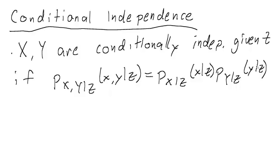And intuitively, this means that once we know Z, then knowing something about Y doesn't tell you anything about X, and vice versa. Once you know Z, knowing something about X doesn't tell you anything about Y.